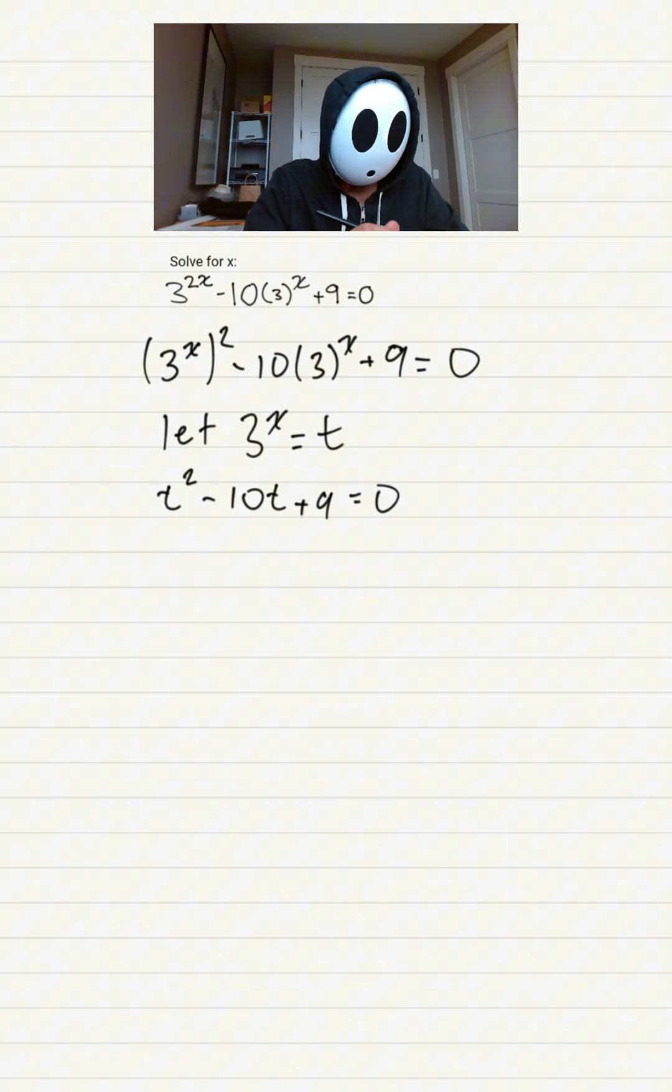Now we recognize this as a quadratic equation, and we will use the rainbow method. So we need to find two numbers that multiply to positive 9 and add up to negative 10. And the two numbers are negative 1 and negative 9.